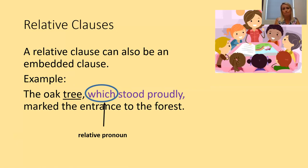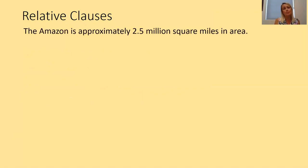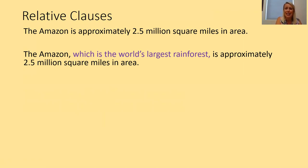Now let's apply this skill to our work on the Amazon rainforest. I've got a main clause: 'The Amazon is approximately 2.5 million square miles in area.' I'm going to add an embedded relative clause, modifying the noun 'the Amazon', using the relative pronoun 'which.' So I've got: 'The Amazon, which is the world's largest rainforest, is approximately 2.5 million square miles in area.' It's really important that the information you add links directly into the sentence, especially in an informative non-fiction text.